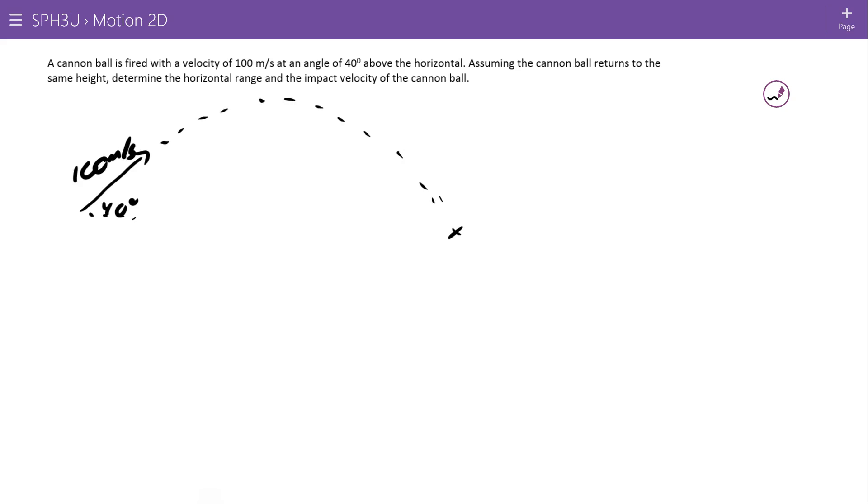Assuming the cannonball returns to the same height, so we're assuming that there's no height difference, this is a perfectly flat ground. Determine the horizontal range, so that'll be delta D in the horizontal direction. And the impact velocity of the cannon, so when it comes back in, how fast is it going?